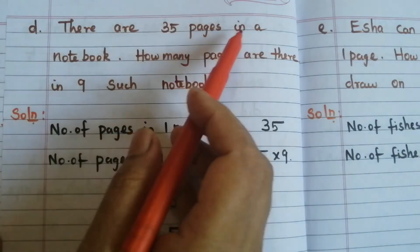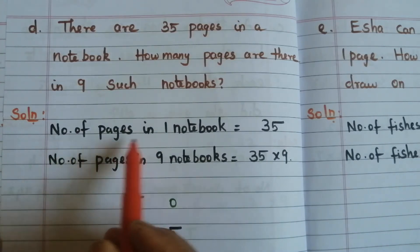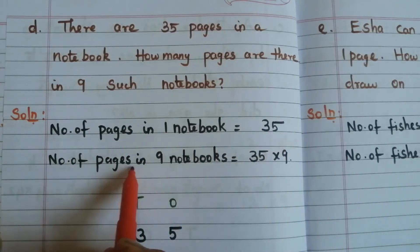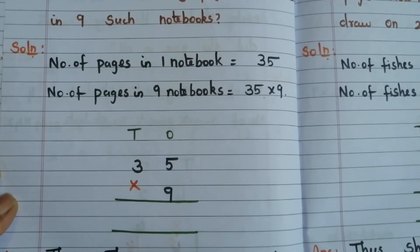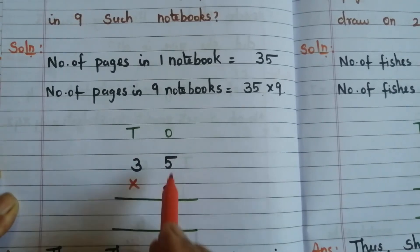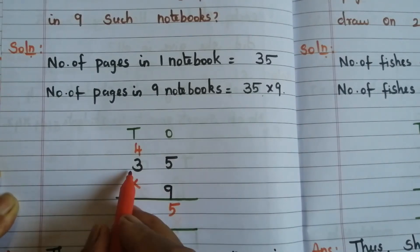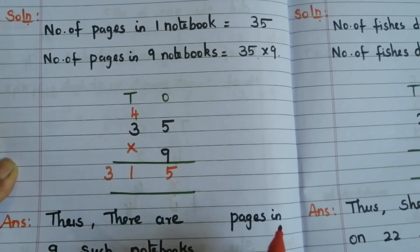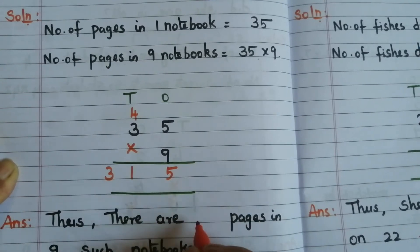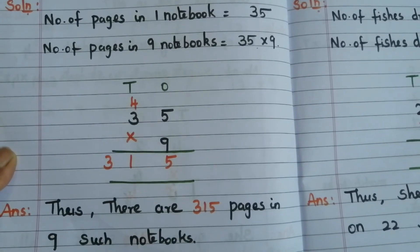D: There are 35 pages in a notebook. How many pages are there in 9 such notebooks? Number of pages in 1 notebook = 35. Number of pages in 9 notebooks = 35 × 9. Start from ones place: 9 fives are 45 — write 5, carry over 4. 9 threes are 27, plus 4 = 31. The answer is 315. There are 315 pages in 9 such notebooks.